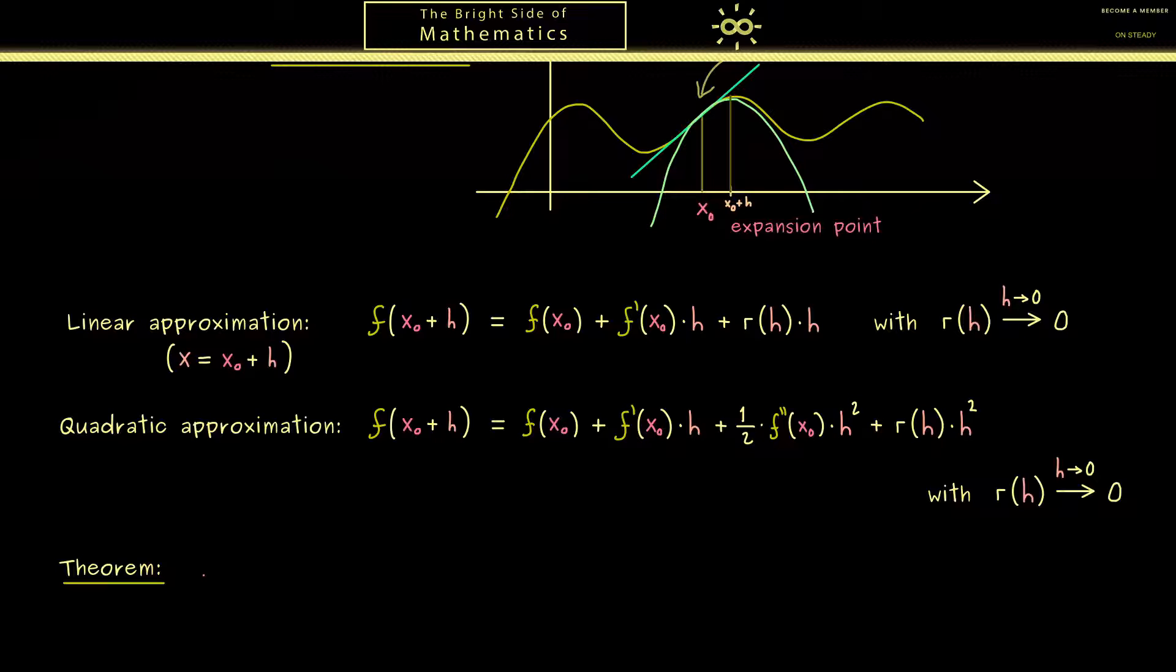So the only thing we need is a function defined on an interval I. Hence let's call it f as before. Now we already know we need enough derivatives. Therefore let's assume that the function f is n plus 1 times differentiable. The reason why this plus 1 is helpful you will see in a minute. And as before we also fix an expansion point x0.